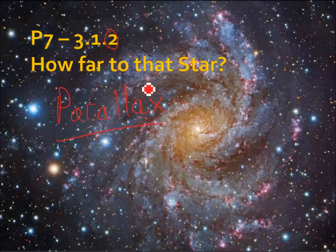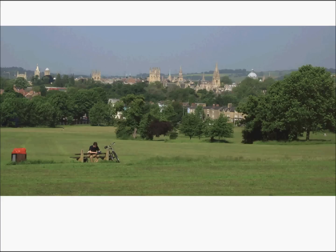So parallax is a technique that we use for finding out how far away stars are. I'm going to quickly show you a couple of pictures to demonstrate how this same effect can be used on planet Earth to find out how far away things are.